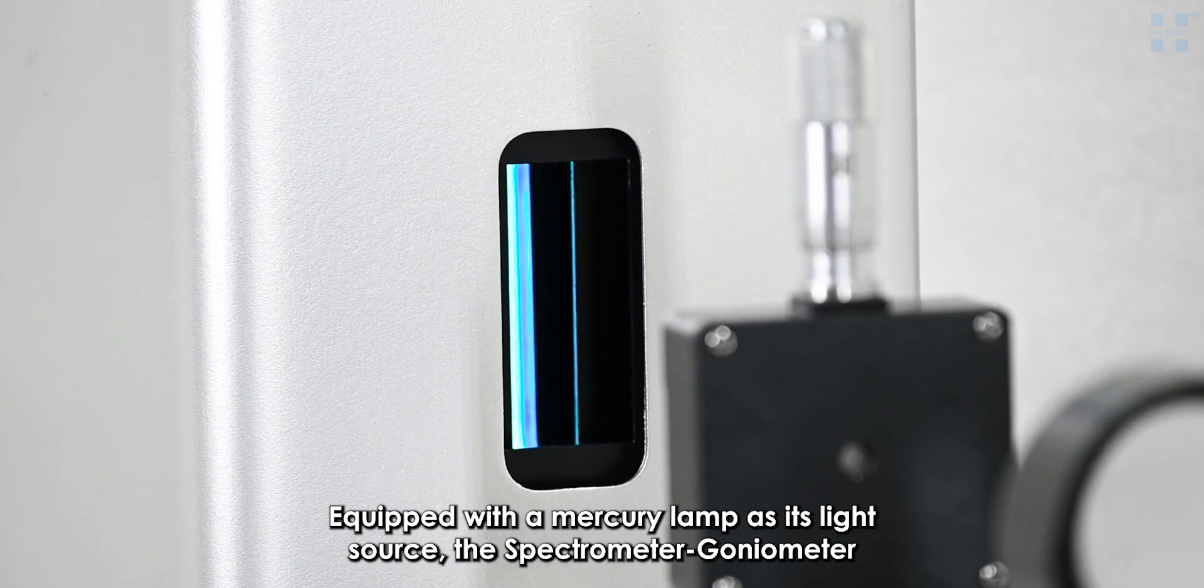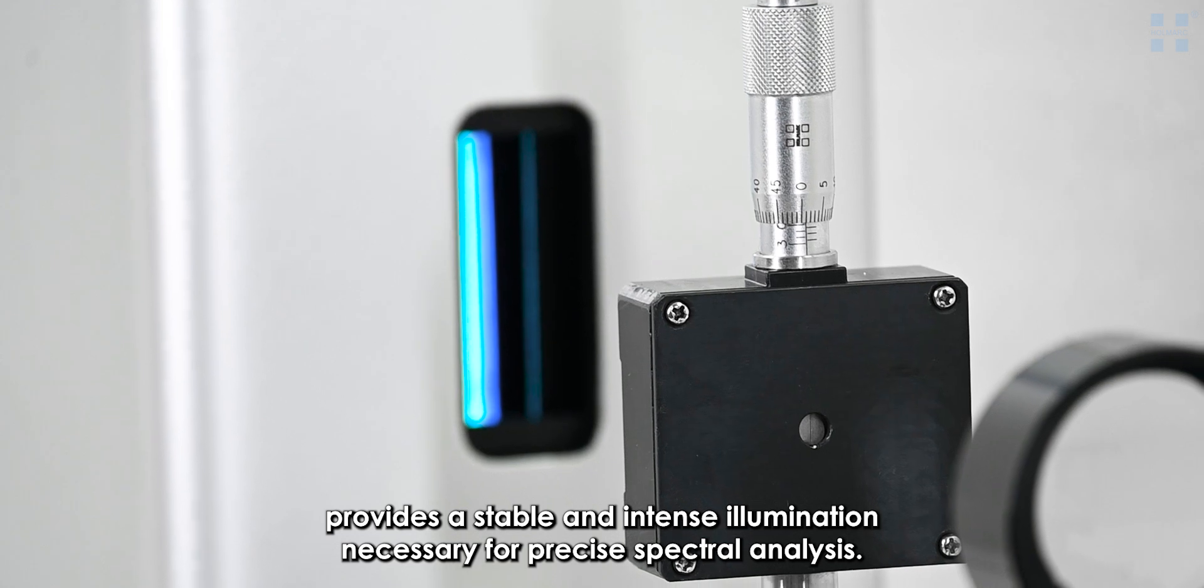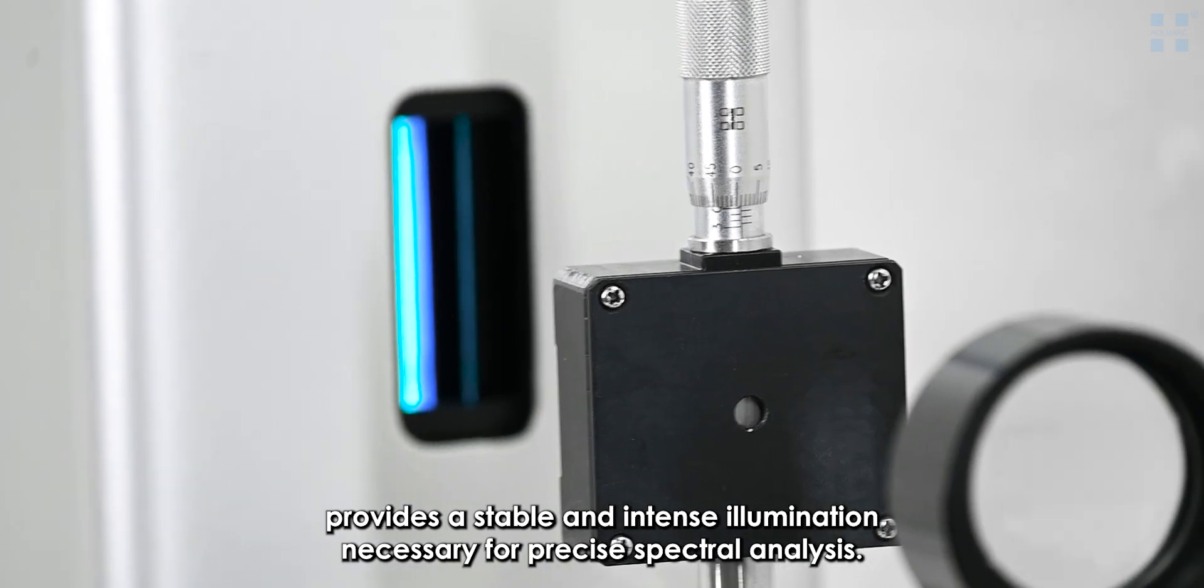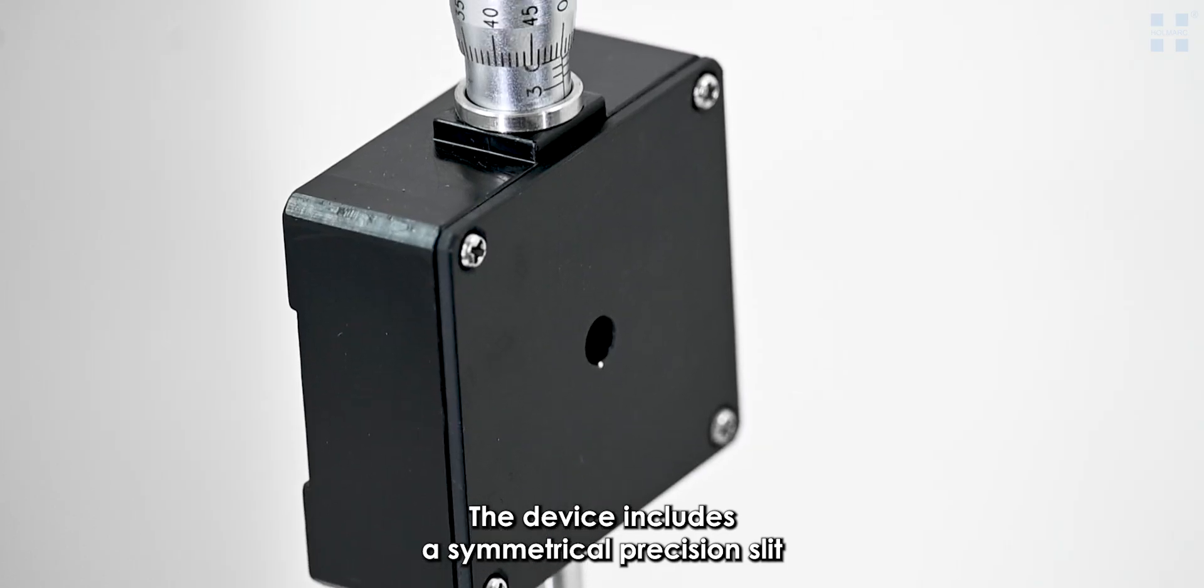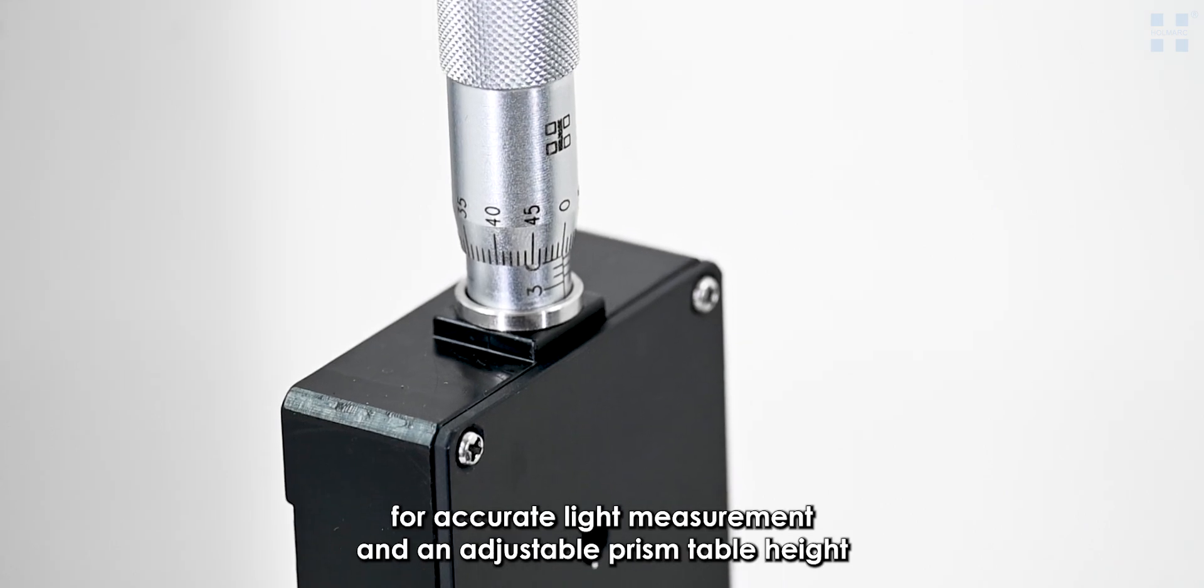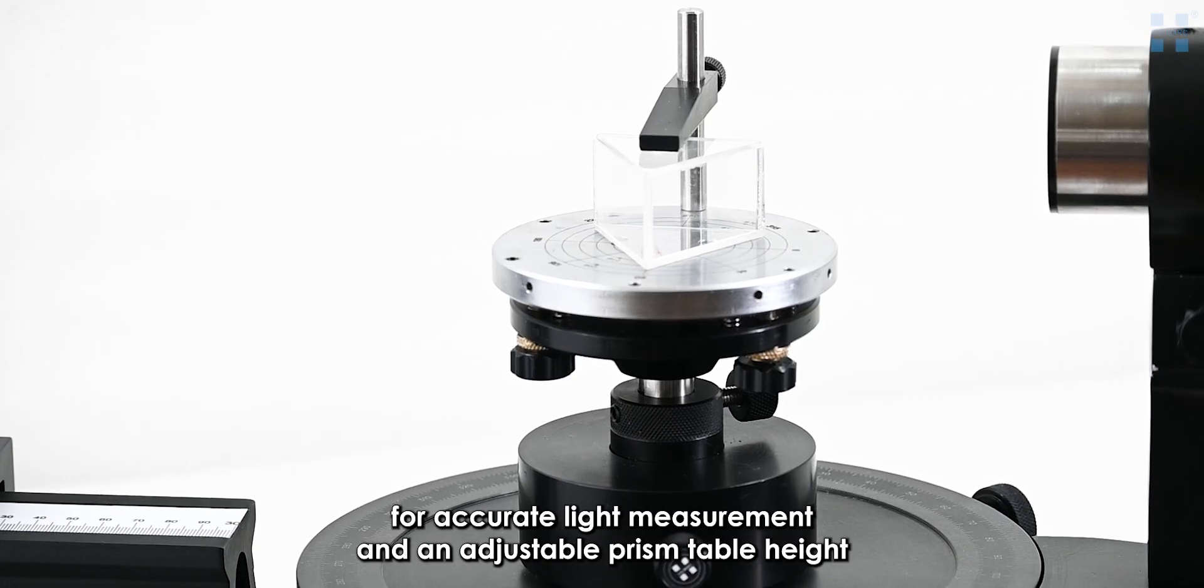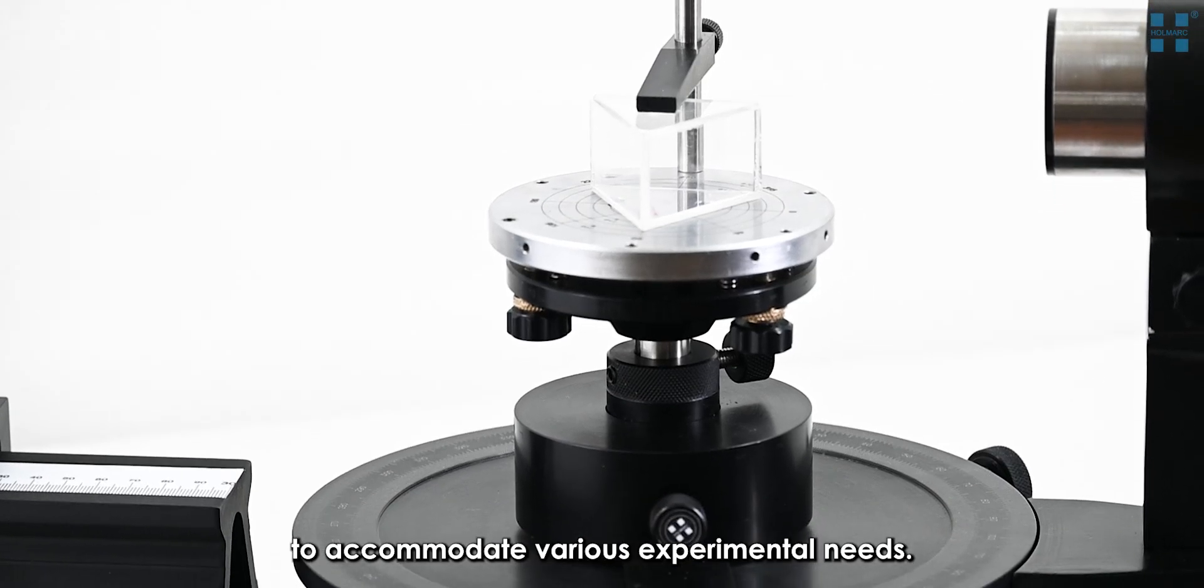the spectrometer goniometer provides stable and intense illumination necessary for precise spectral analysis. The device includes a symmetrical precision slit for accurate light measurement and an adjustable prism table height to accommodate various experimental needs.